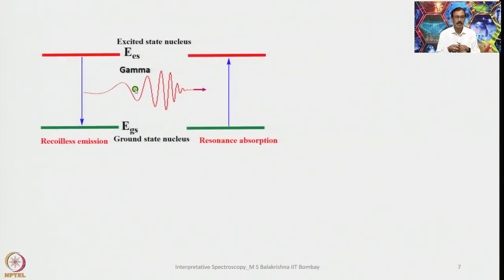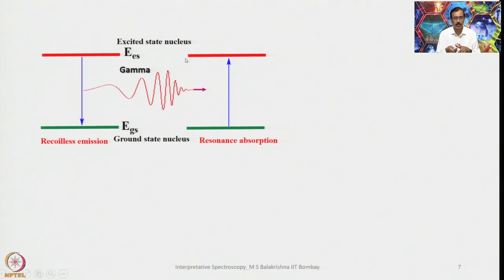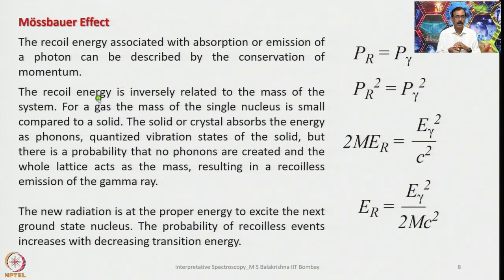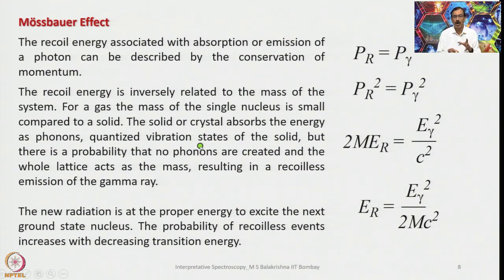This shows typical Mössbauer emission: the recoilless emission, resonance absorption of gamma radiation, and the ground and excited states of the nucleus. The recoil energy associated with absorption or emission of a photon is described by conservation of momentum: P_r = P_γ. The recoil energy is inversely related to the mass of the system. For a gas, the mass of a single nucleus is small; in a solid or crystal, the energy is absorbed as phonons — quantized vibration states. There is a probability that no phonons are created and the whole lattice recoils, resulting in recoilless emission of a gamma ray. The probability of recoilless events increases with decreasing transition energy.